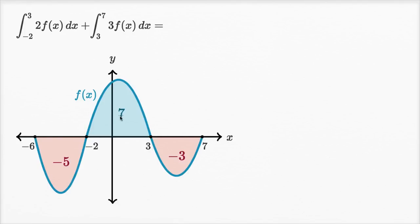They also give us the areas between y equals f of x and the x-axis. The negative areas show that our function is below the x-axis. Given that, can we evaluate that? Pause the video and see if you can do it on your own.